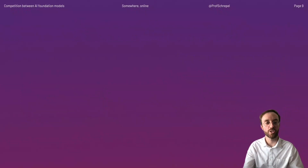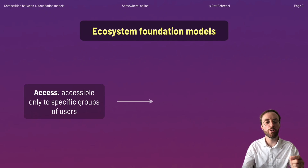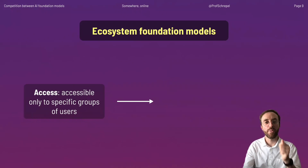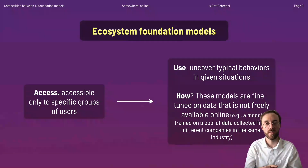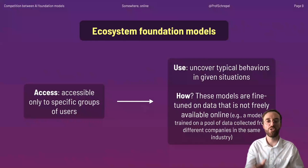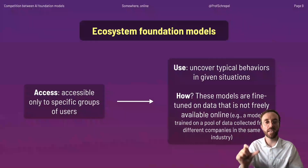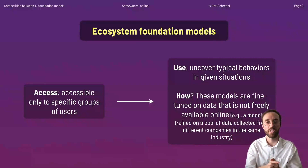The second type is what we call ecosystem foundation models. Those are the ones that only a specific group of users can access. They can be helpful in uncovering typical behaviors in given situations — for example, accounting firms may want to understand what other firms will do in a similar situation. These models are fine-tuned with data that is not freely accessible on the web, but is in the possession of the group of companies providing the data.